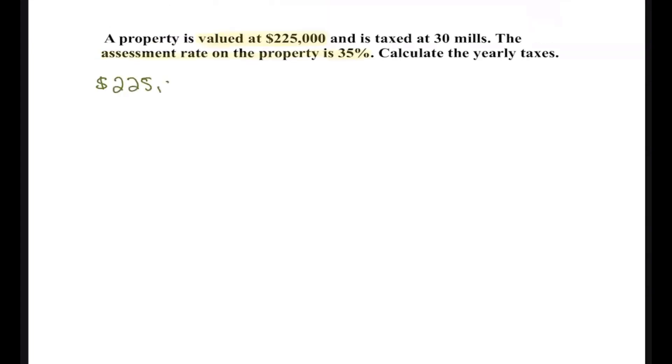The assessed value is 35% of $225,000. Do you know how to find 35% of $225,000? You multiply. So $225,000 times 35% — what do you get? Let's see: 225 times 35% equals $78,750.